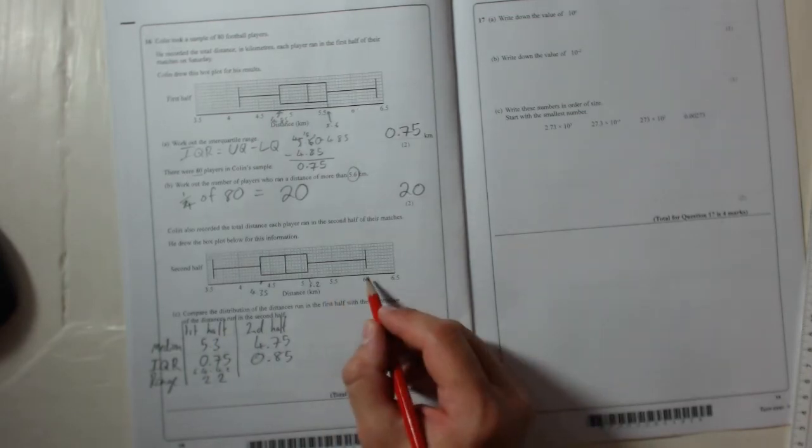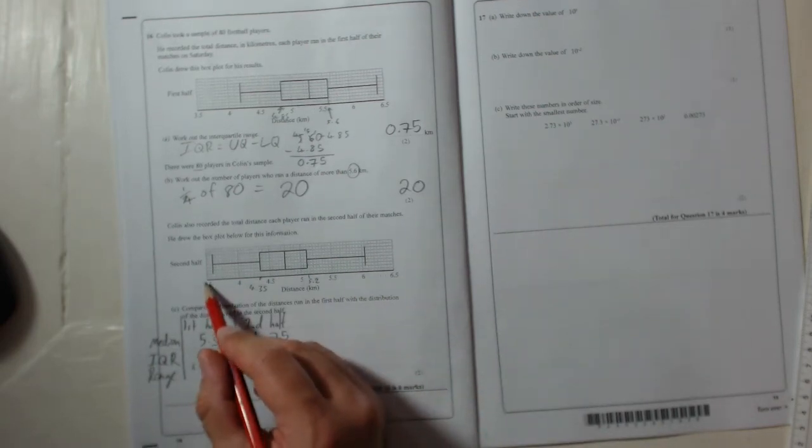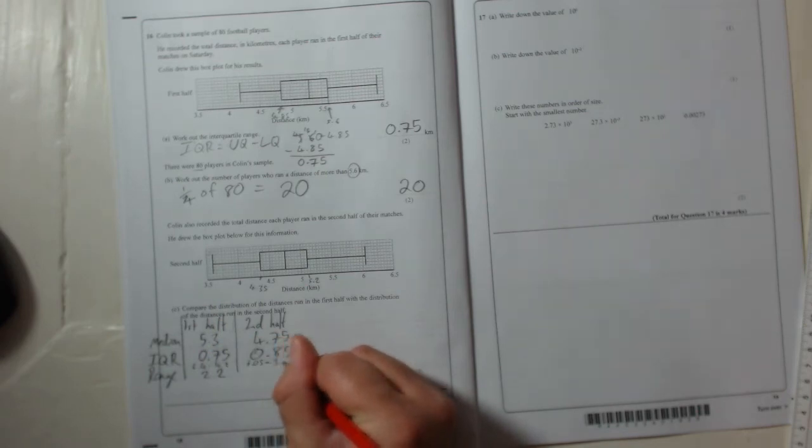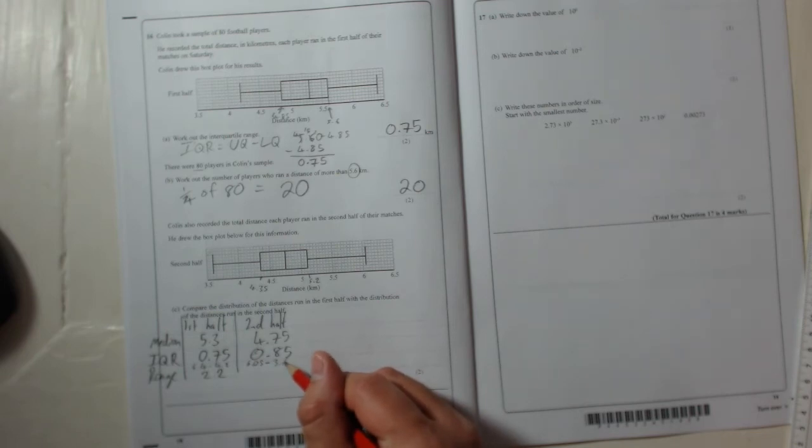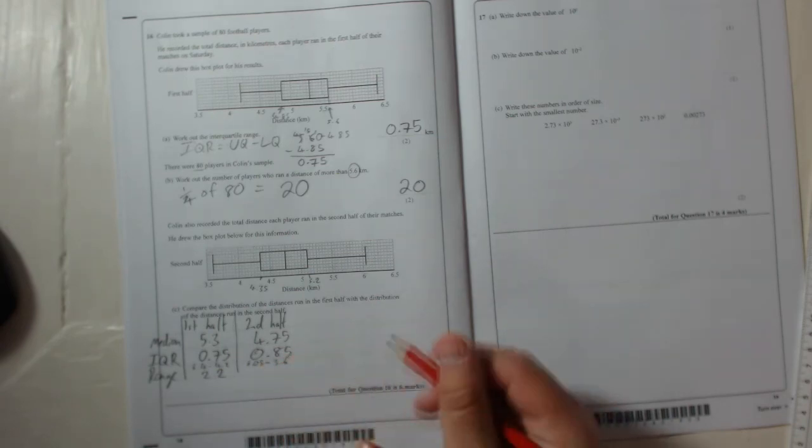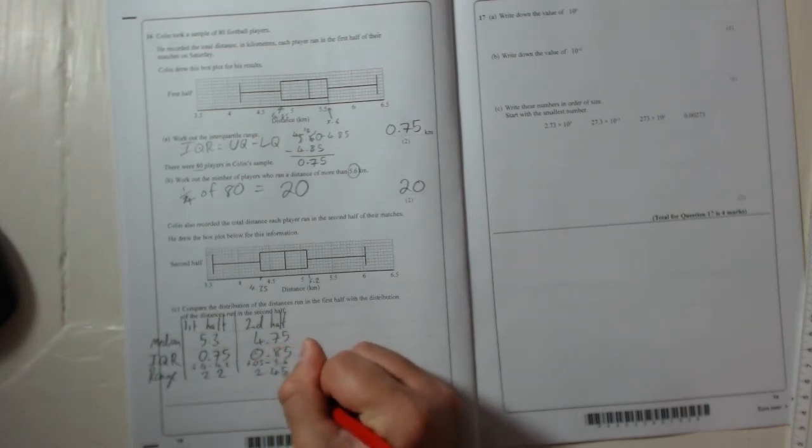And second half is 6.05 take away 3.6. If you add 0.4 on, that takes you to 4, and then you need 2 more to get to 6, that's 2.4, and then an extra 0.05. So that is 2.45.